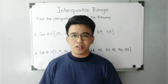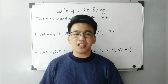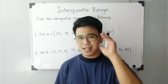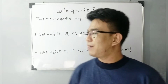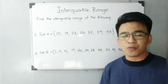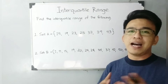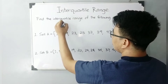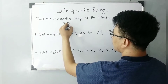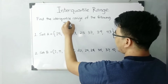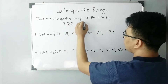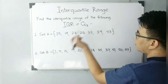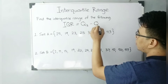Last time, we uploaded a video with regards to the quartiles of ungrouped data. So without further ado, let's do this topic. What is the formula in calculating the interquartile range of ungrouped data? Here's the formula: IQR, or your interquartile range, is equal to the upper quartile or third quartile minus the lower quartile or the first quartile.